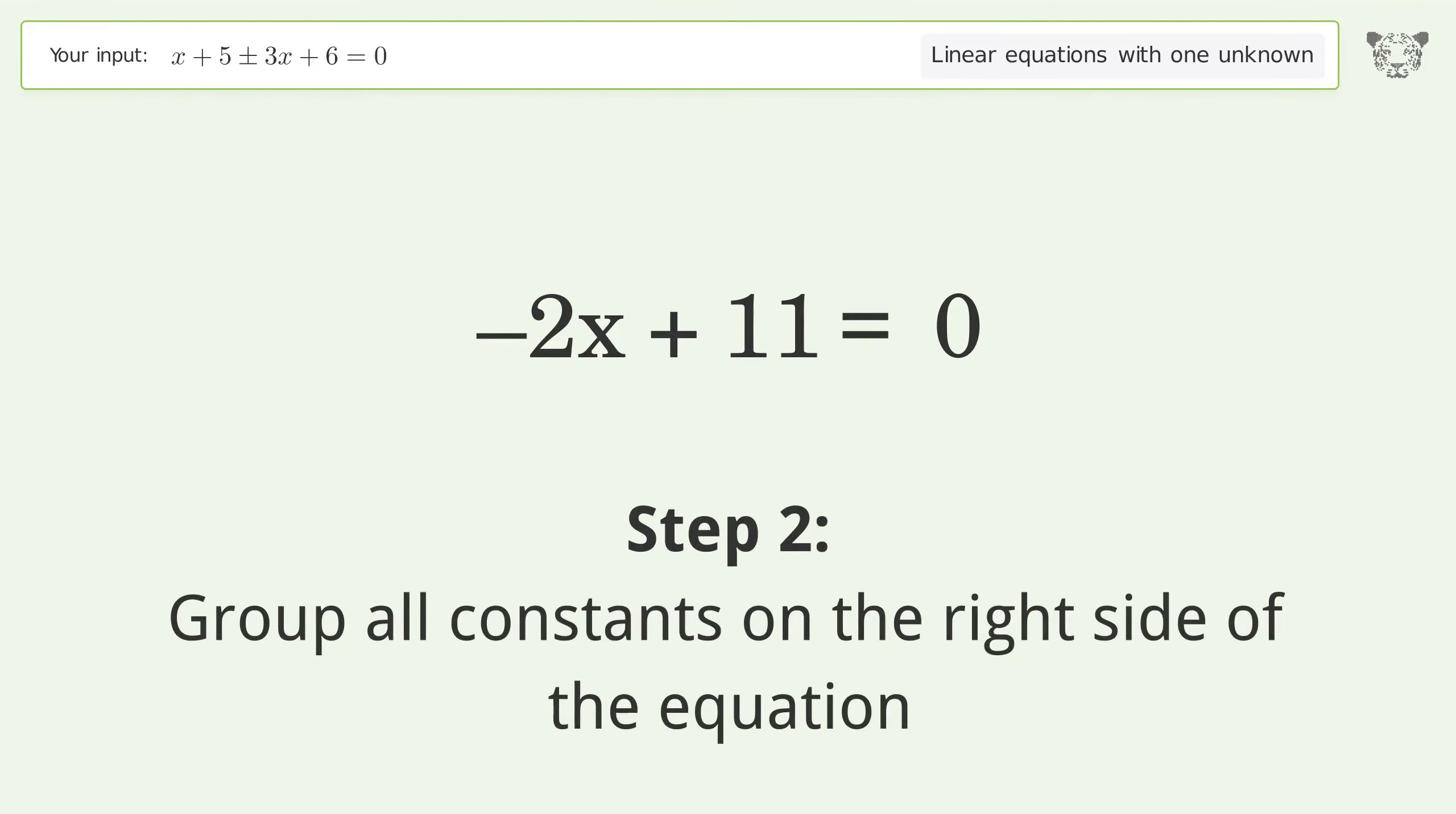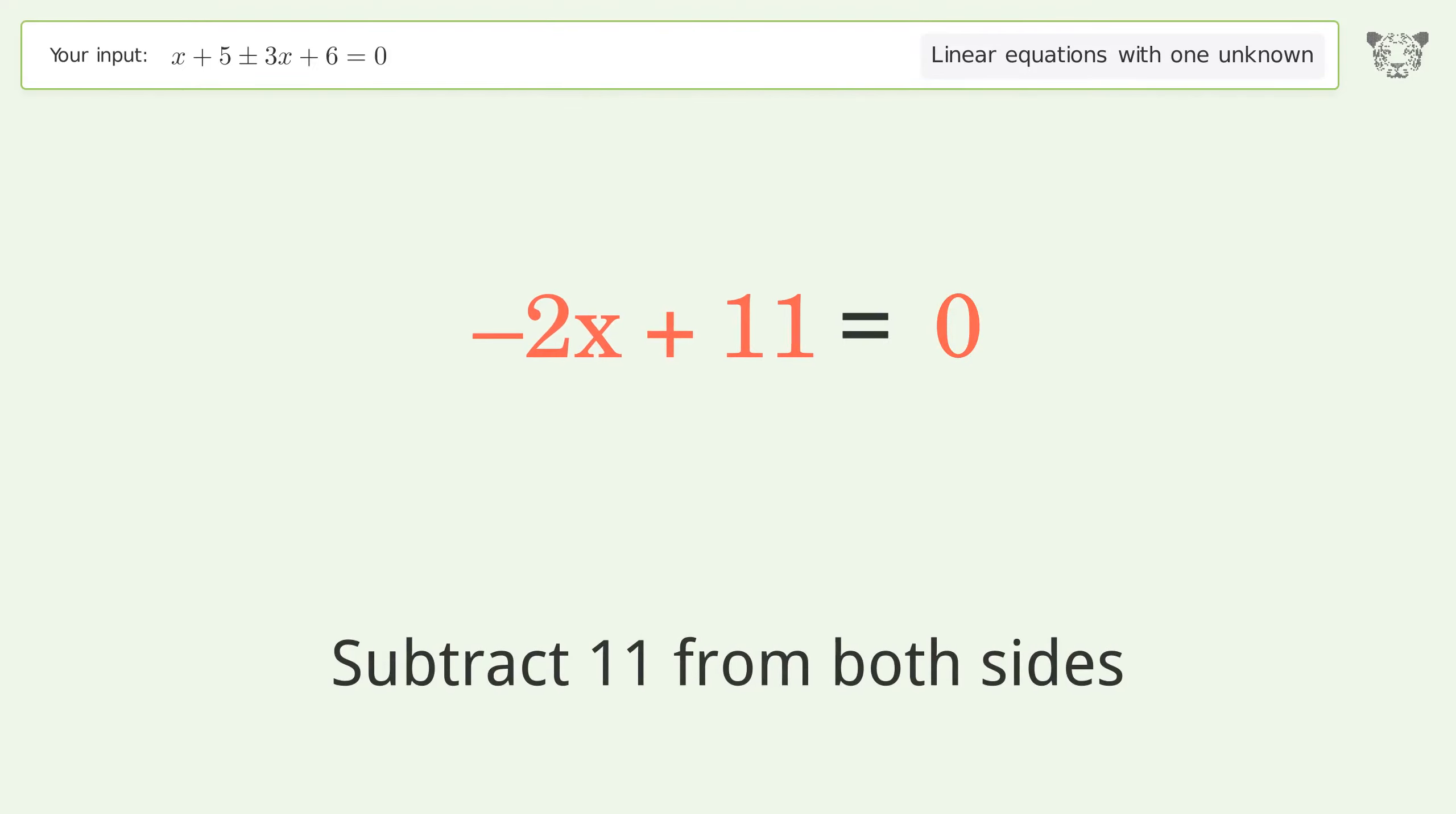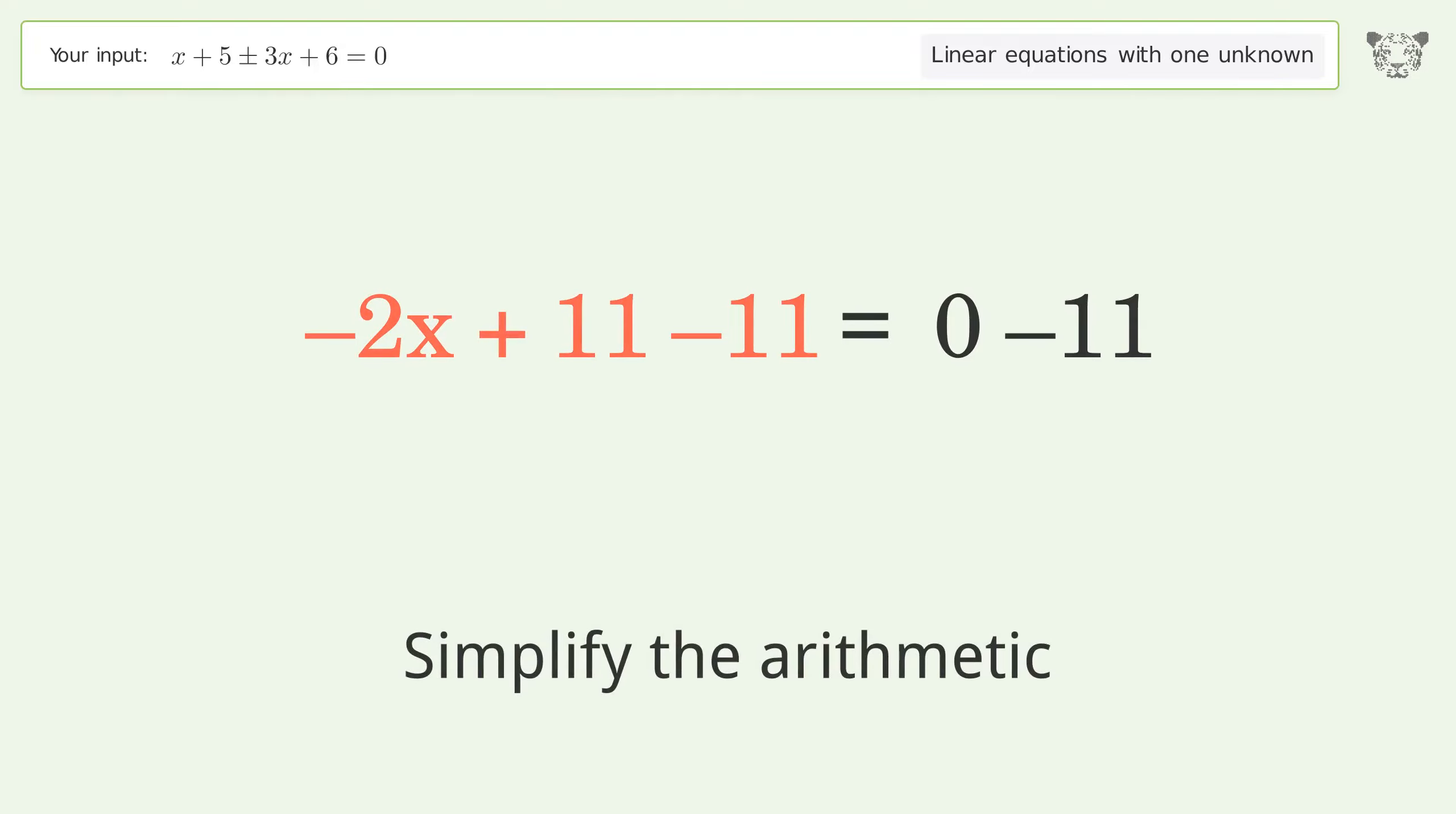Group all constants on the right side of the equation. Subtract 11 from both sides. Simplify the arithmetic.